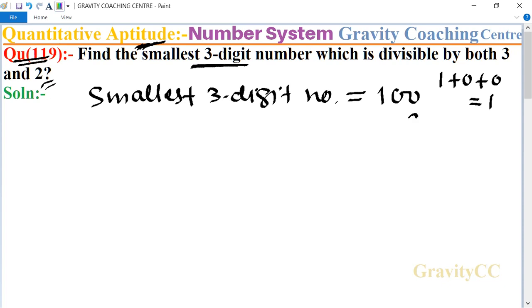Now we add 2 to 100, so it is equal to 102. Here 102 is a number which is exactly divisible by 2, because its last digit is 2, and it is also divisible by 3, because the sum of digits is equal to 3.